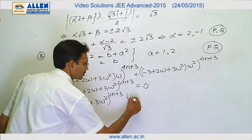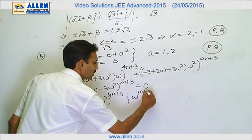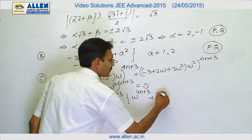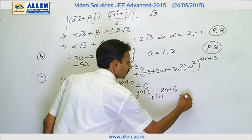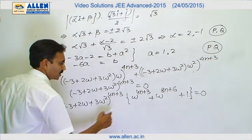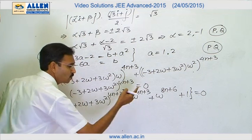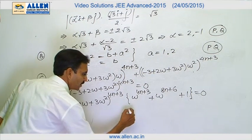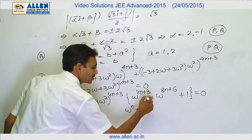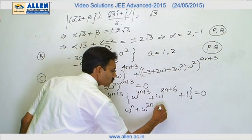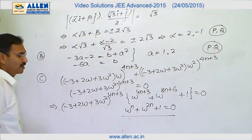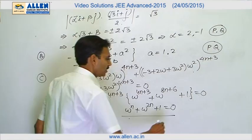What I will have is omega power 4n plus 3 plus omega power 8n plus 6 plus 1 equals to 0. This expression can be written as we know omega cube is 1. So it will be only omega power n.